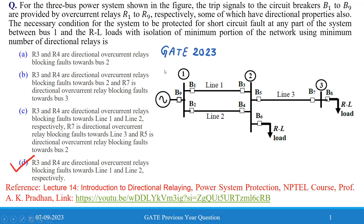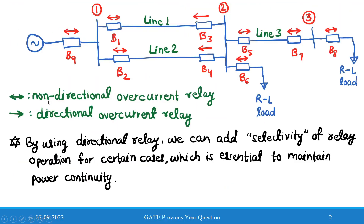Looking at the figure for this problem, if we denote the directional and non-directional relays over the circuit, we can see that only R3 and R4 will be directional overcurrent relays, and the others are non-directional overcurrent relays. Let's first understand why directional relays are required.